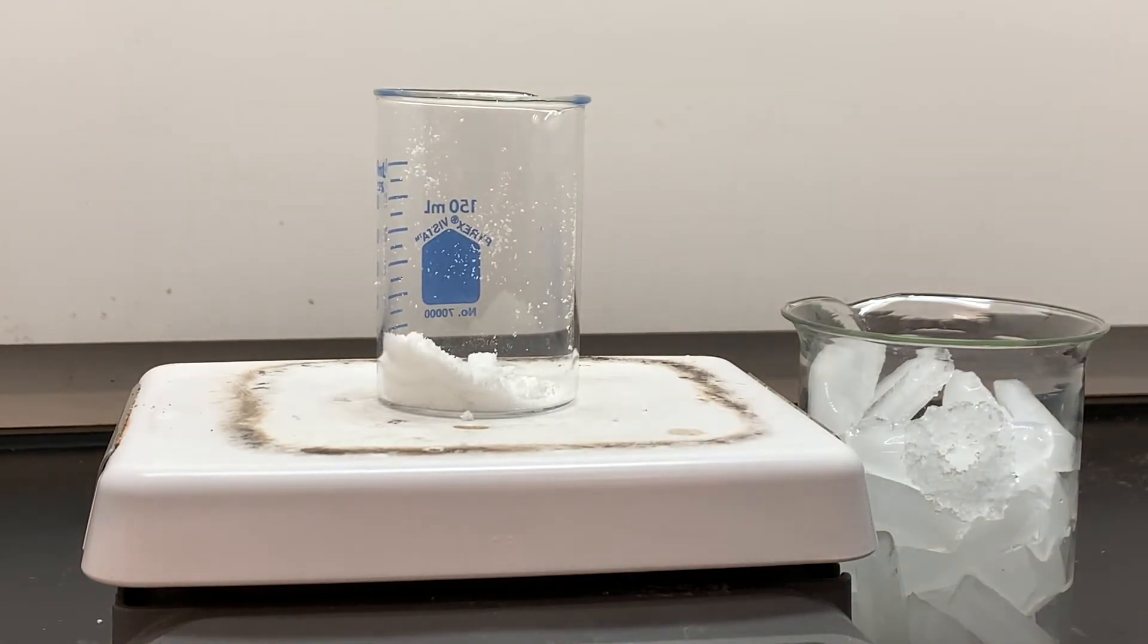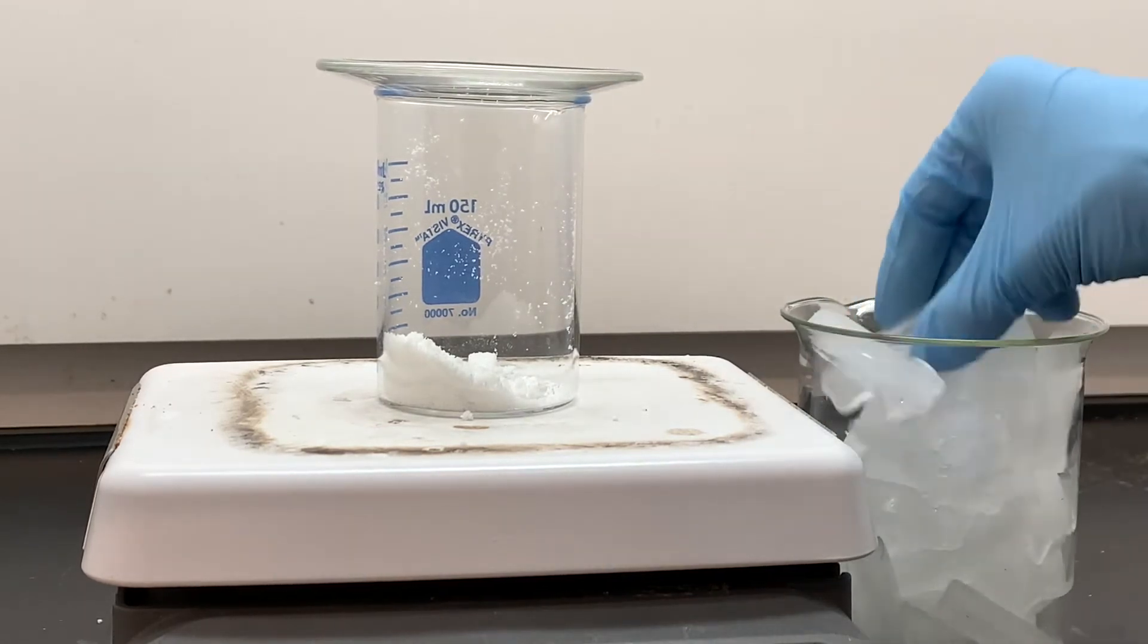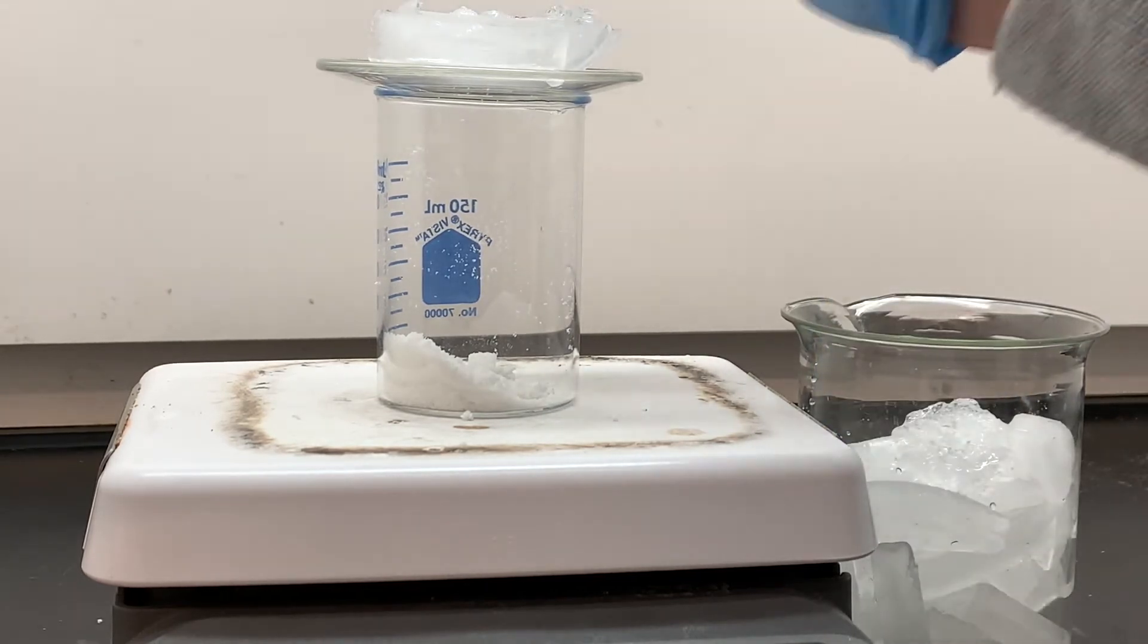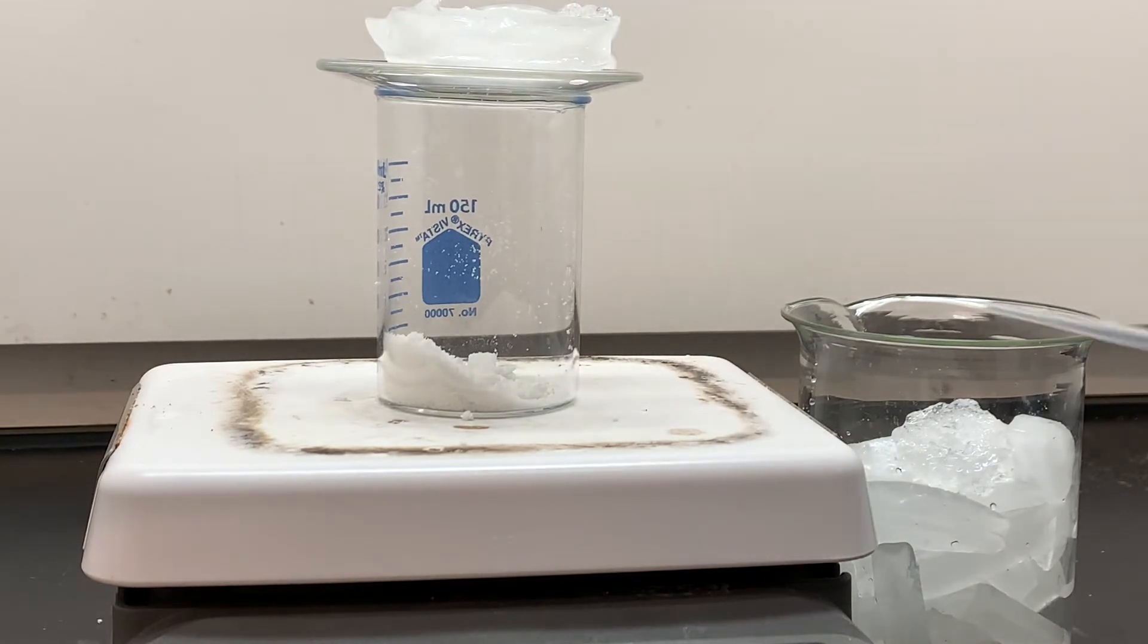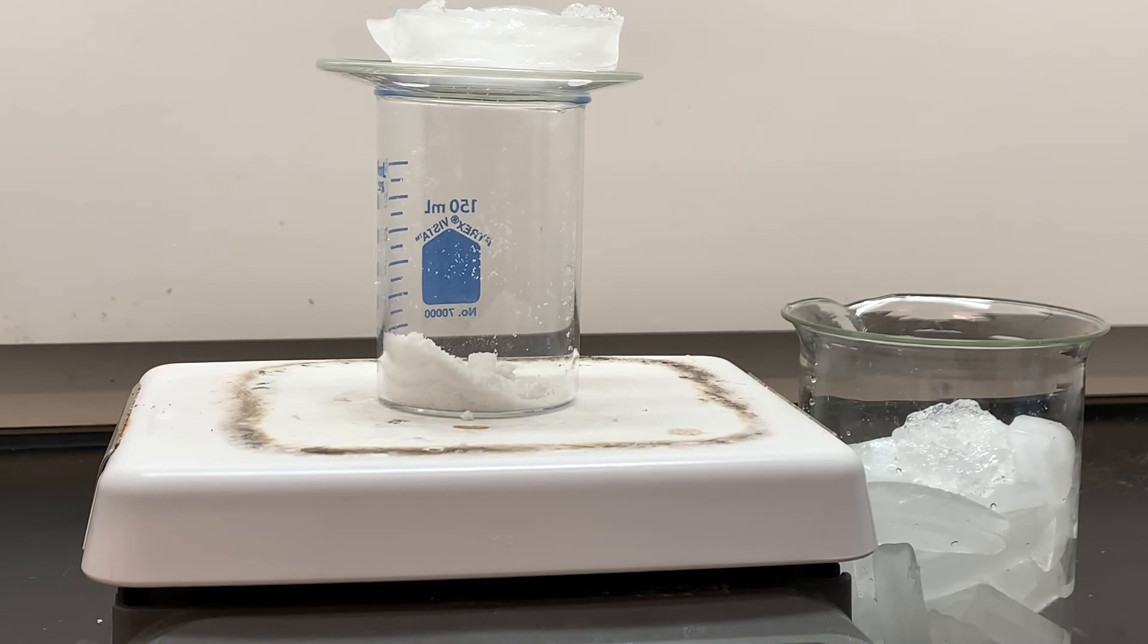As it heats up to a gas, we are going to catch it on the underside of this watch glass, which I'm going to be chilling with some ice cubes. What you want to be looking at is the underneath of this watch glass. This is where the crystals are going to start forming. It's going to take a while for the temperature to get warm enough for the crystals to actually start to form.